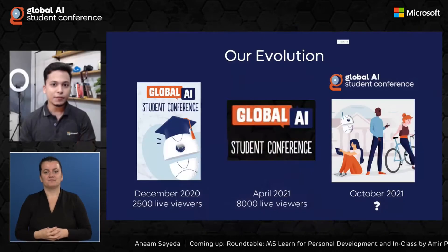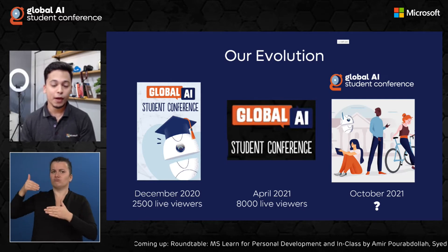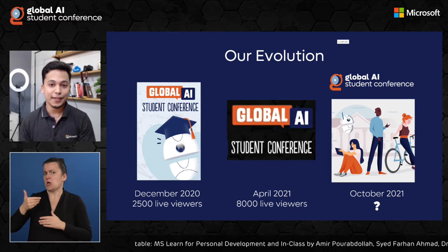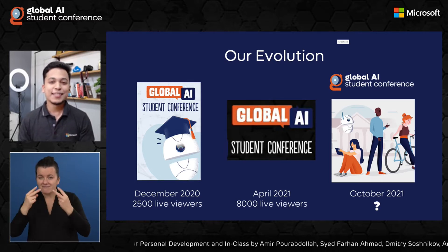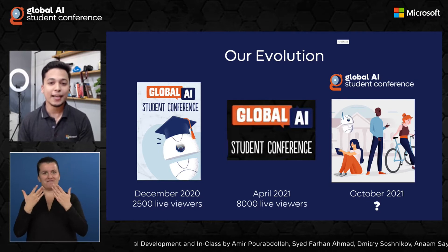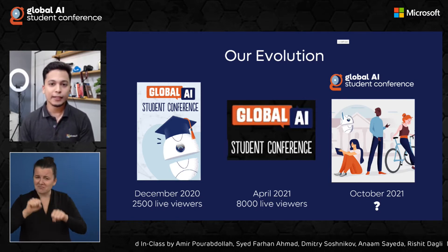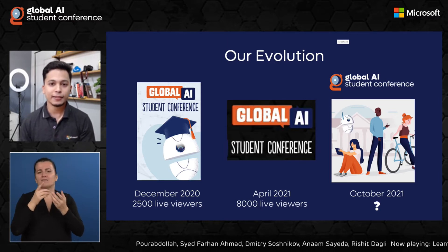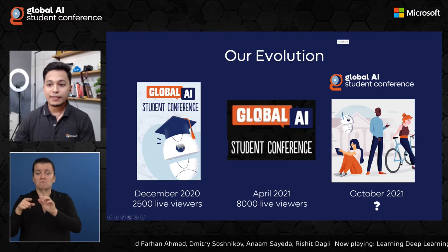This is the third edition of the Global AI Student Conference. The first two were really successful — we reached about 2,500 live views for the first one, and 8,000 for the second. Let's hope the third one is bigger and better! Please share this event on social media, tag us at Global AI community, use the hashtags, and share it with your friends and connections.